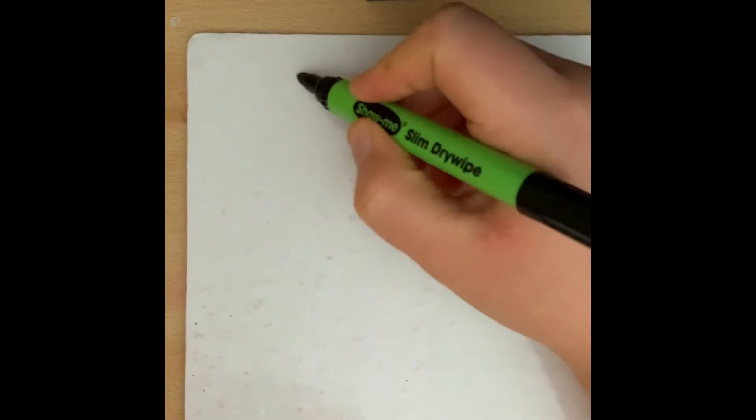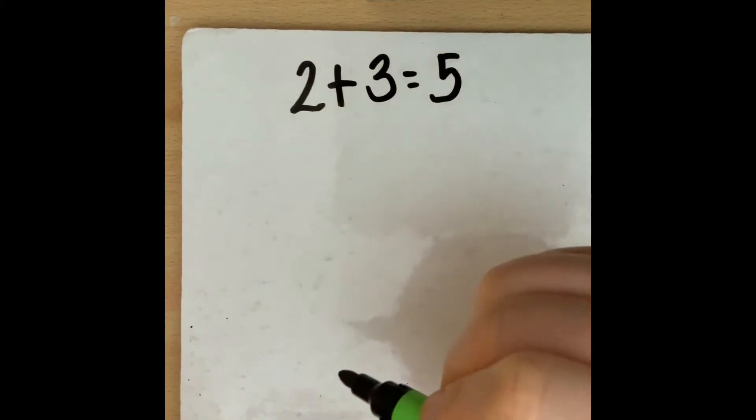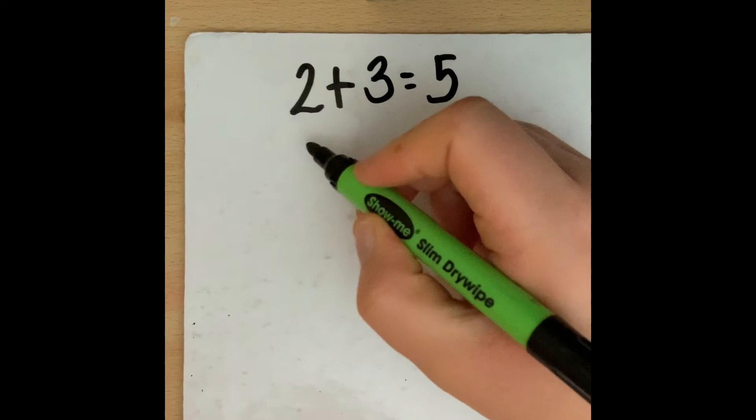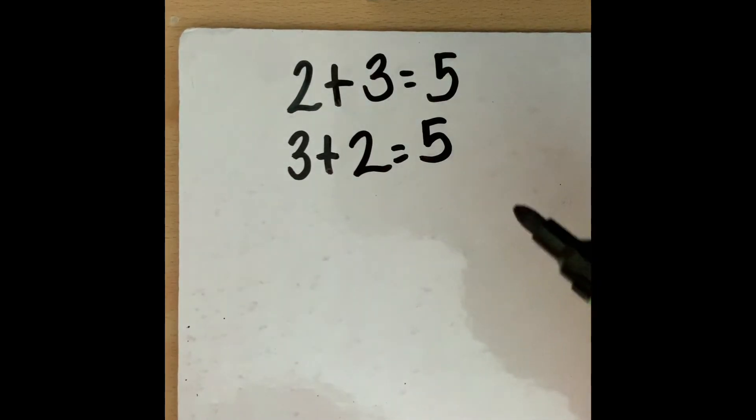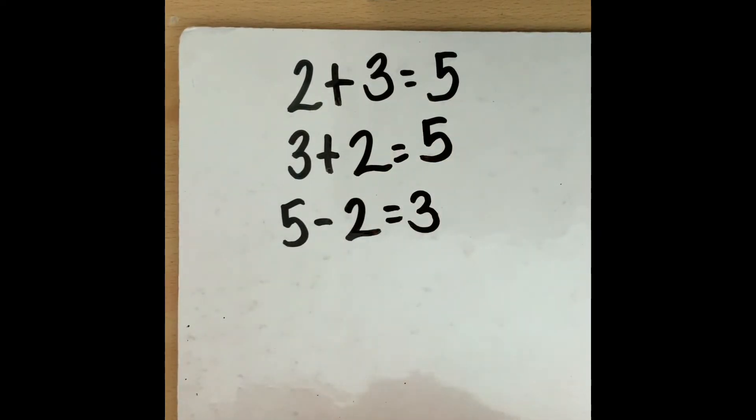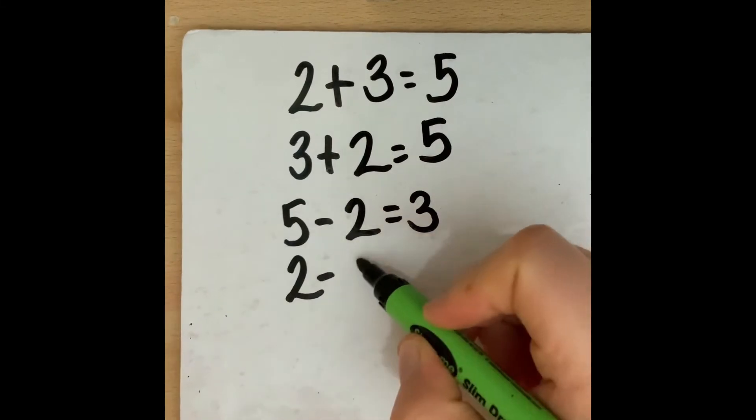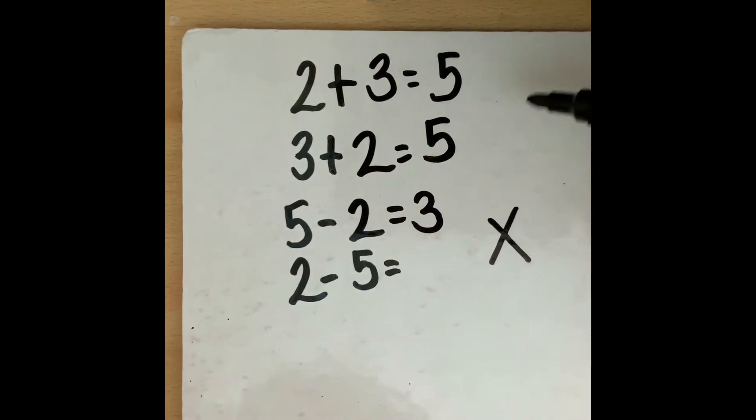However this doesn't work for subtraction and I will show you why. So if I have a simple question like 2 add 3 which I know equals 5, I can switch the numbers around so I can do 3 add 2 and the answer would still be 5. However if I did a subtraction sum like 5 subtract 2 equals 3, that is fine, but if I wanted to swap the numbers round and do 2 subtract 5 it would not give me the answer 3. So subtraction is not commutative.